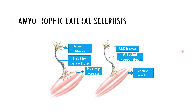Next is amyotrophic lateral sclerosis (ALS), where there is rapid progressive muscle weakness and wasting of the voluntary muscles, which may lead to an inability to walk. In the image, you can see a normal nerve with a healthy nerve fiber and healthy muscle alongside an ALS-affected nerve, where the affected nerve fiber endings have caused muscle wasting. This condition causes an inability to walk, grip, or swallow properly.